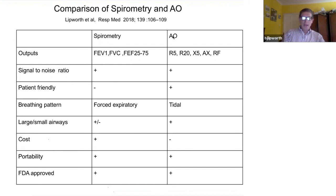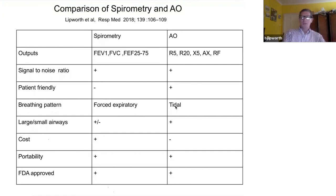Both airway oscillometry and spirometry have an excellent signal-to-noise ratio. Spirometry is not patient-friendly because it's quite hard to perform a forced expiratory maneuver, particularly in COPD — breathing out all the way to residual volume. Oscillometry measures breathing at normal tidal quiet breathing, whereas spirometry uses a forced expiratory maneuver. How many patients do you see in everyday life doing a forced expiratory maneuver? Everyone breathes normally at tidal volume.